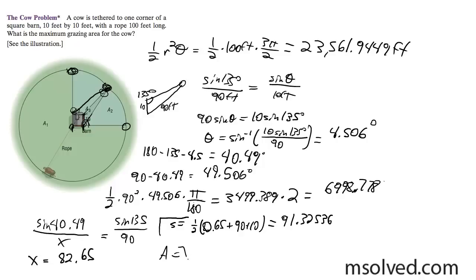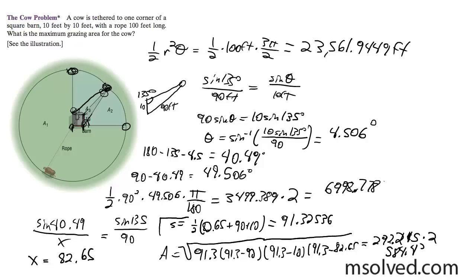Alright, so my area is going to be the square root of 91. I'm using the full digits here, but I'm just going to round it down to 3 times 91.3 minus 90 times 91.3 minus 10 times 91.3 minus 82.65. So I get this, and for my area, what I ended up getting out was 292.15, and I multiplied this by 2 because I have two of those triangles, and that gave me 584.43.